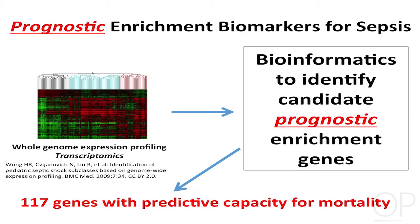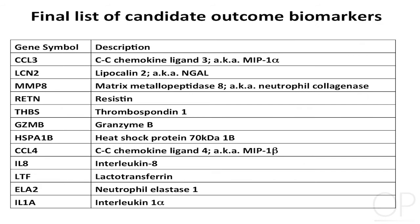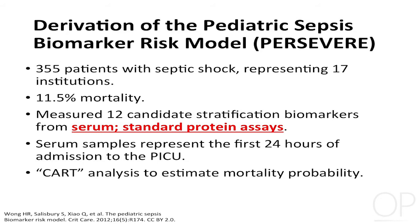These genes are at the mRNA level, so we wanted to pair this down to something more translatable in the clinical setting. Among these 100 genes, what is biologically plausible, and what can we actually measure in the plasma or serum compartment as protein? Using those criteria, we came up with a list of 12 biomarkers and developed what we call the Pediatric Sepsis Biomarker Risk Model — PERSEVERE for short.